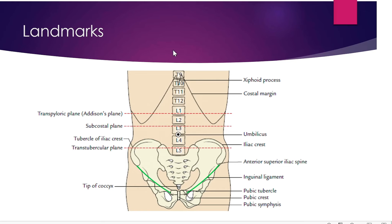The transpyloric plane is also known as Addison's plane. You can mark this plane as the midpoint of the line joining the jugular notch to the pubic symphysis — the midpoint of that line passes through the transpyloric plane. You can also find this point by placing one hand-breadth below the xiphisternal joint. The transpyloric plane intersects the ninth costal cartilage and corresponds to vertebral level L1.